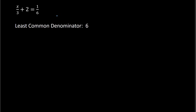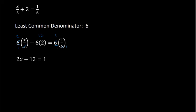So I then multiply everything by 6. For the first term, the 6 and the 3 would divide out, giving me 2 over 1. Then 6 times 2 is 12, and 6 times 1 over 6 — the 6s would divide — and that gives me 1 over 1. So what I have is 2 times x plus 12 equals 1.